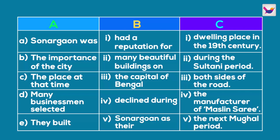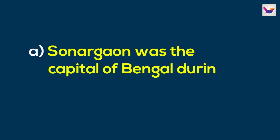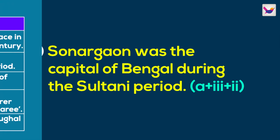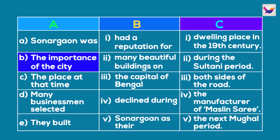For the first phrase 'was,' there is one option in column B: 'the capital of Bengal.' We need to match this. Going to column C, there is the option 'during the Sultani period.' So one sentence is: it was the capital of Bengal during the Sultani period. We have seen the importance of the city as our subject, and in the middle column, the subject is matched.